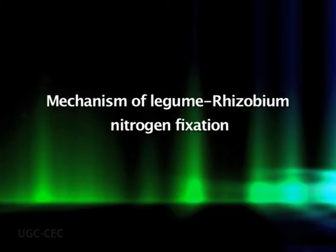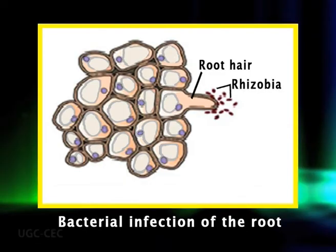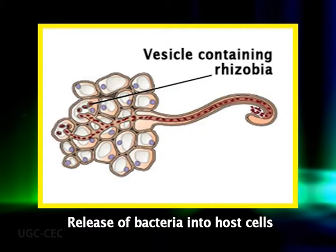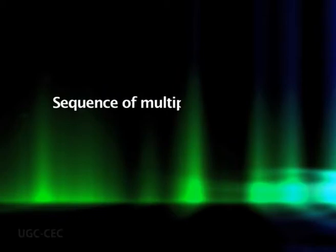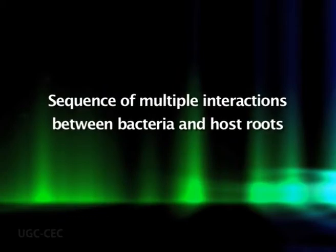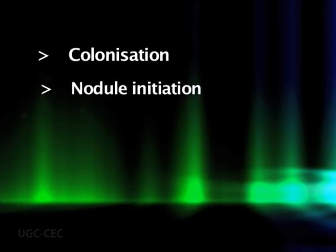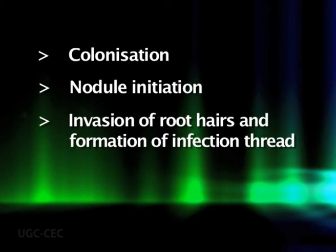Now we will discuss the mechanism of legume-rhizobium nitrogen fixation. The sequence of events beginning with bacterial infection of the roots and ending in the formation of mature nitrogen-fixing nodules has been studied extensively in legumes. The process involves multiple interactions between the bacteria and host roots and can be discussed in four principal stages: colonization, nodule initiation, invasion of root hairs and formation of the infection thread, and finally the release of bacteria.